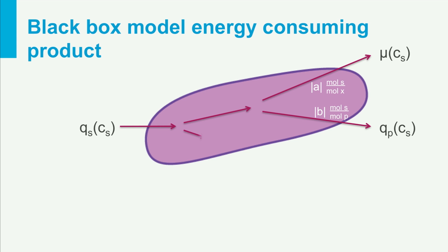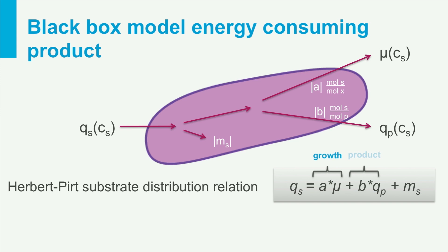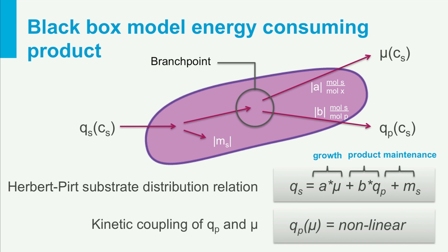And finally, maintenance with a partial substrate consumption rate MS. Each of these three processes requires energy, making aerobic conditions necessary. We can put this insight into one equation — the Herbert-Pert substrate distribution relation — with three terms representing partial consumption rates: A multiplied by mu for growth, B multiplied by Qp for product, and MS for maintenance. The cell has a branch point where substrate goes either to biomass or to product. We call this kinetic coupling, where Qp and mu are coupled in a characteristically non-linear way.